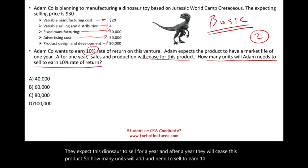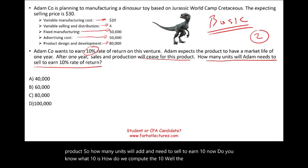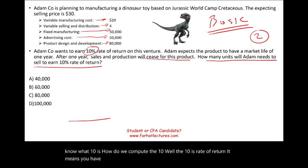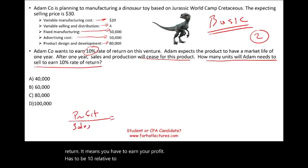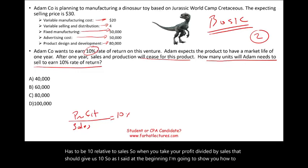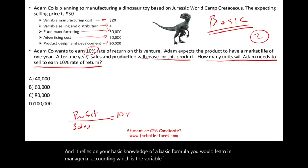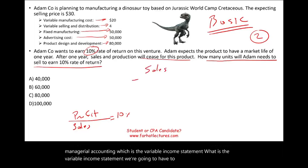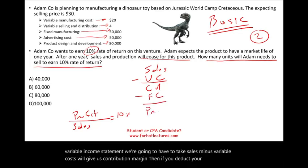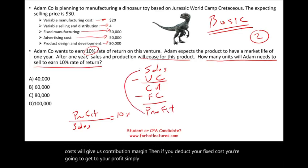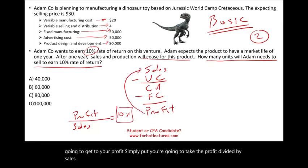What does 10% mean here? The 10% is rate of return — it means your profit has to be 10% relative to sales. So when you take profit divided by sales, it should give us 10%. The solution relies on your basic knowledge of the variable income statement: sales minus variable cost gives contribution margin, then deducting fixed cost gives profit. Simply put, profit divided by sales should equal 10%.